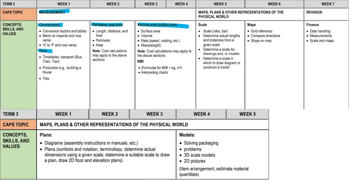Metric to imperial system — the metric system is used by all Commonwealth countries, while the imperial system is used in the US. Then there's time: timetables, transport — buses, trains, taxis — and production periods like building a house, tides from the sea.